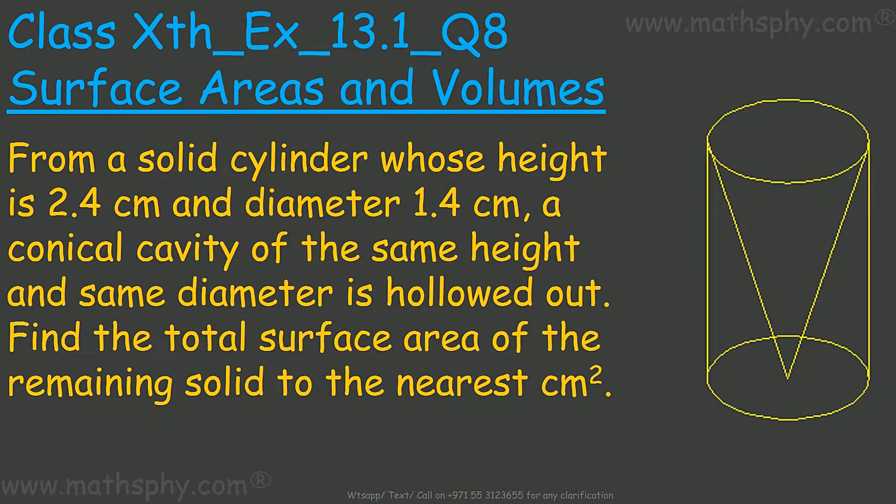This one here says, from a solid cylinder whose height is 2.4 centimeters and diameter is 1.4 centimeters, a solid cylinder. A conical cavity of the same height and same diameter is hollowed out, means we dig out this conical shape in this cylinder. Find the total surface area of the remaining solid to the nearest cm².